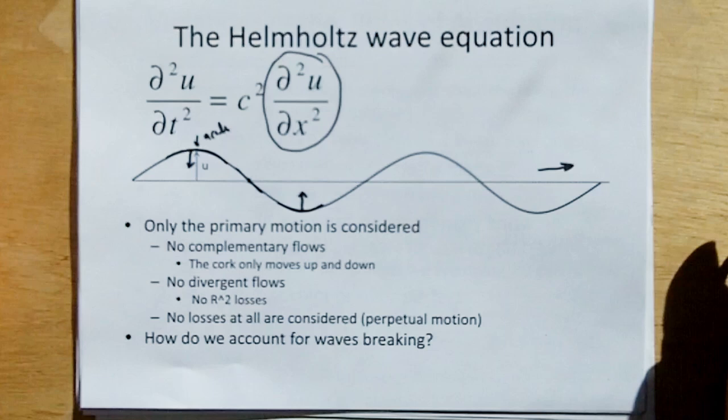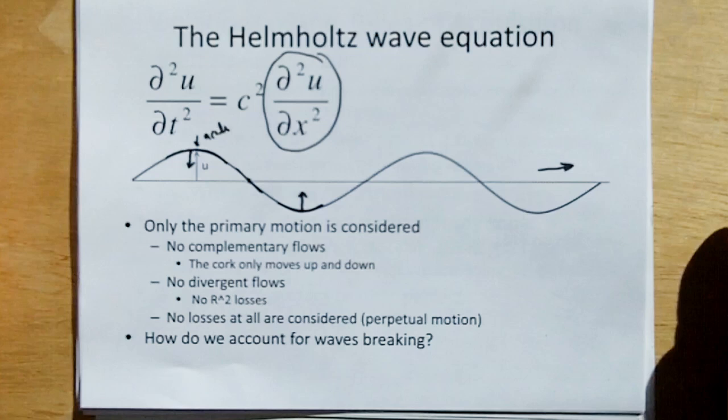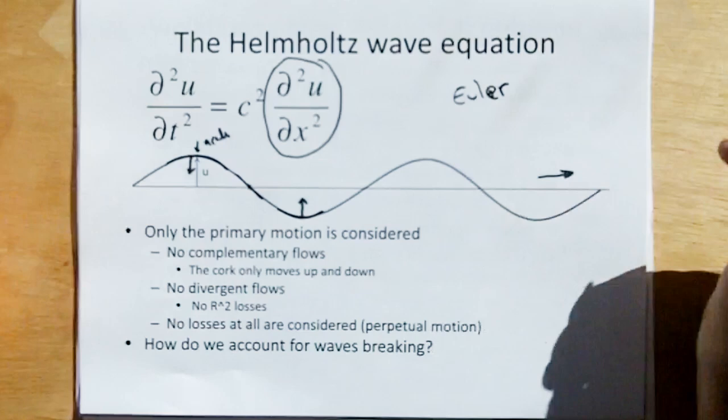And that's what the problem of this equation. It is a very simplified model, and it doesn't account for waves breaking. It doesn't consider any losses. It doesn't consider divergent flows, and it doesn't consider complementary flows. This is just like the Euler model. It just is a simple mimic of observed phenomena. It does not really explain the wave well.